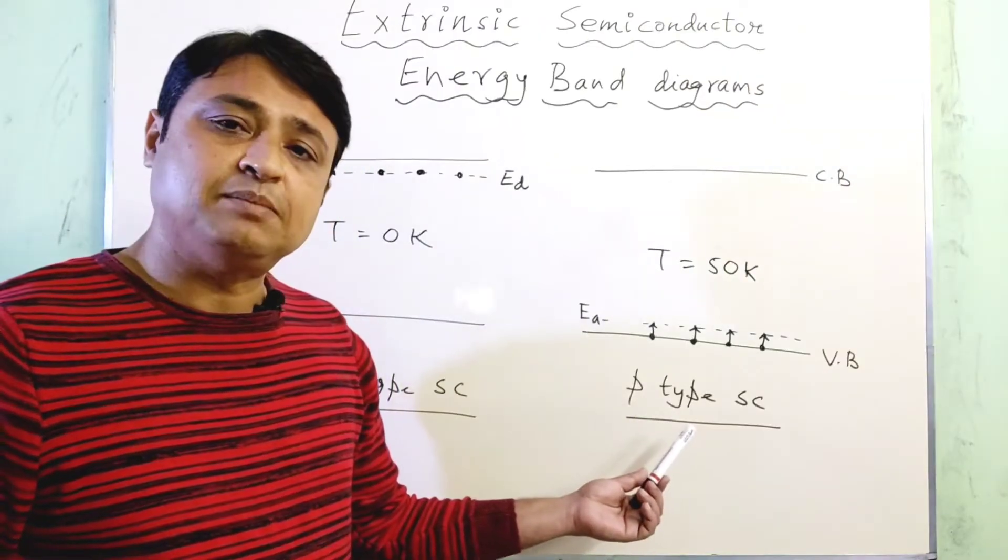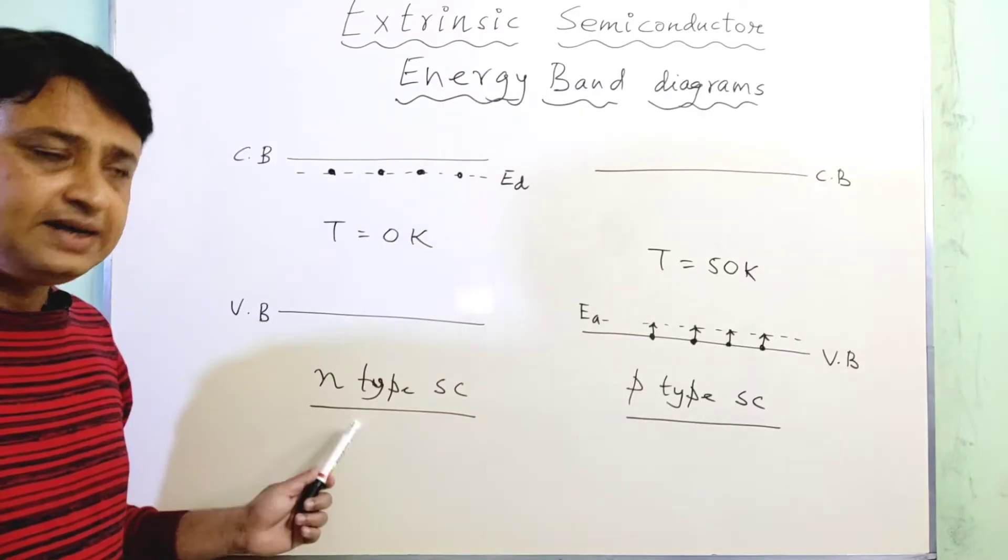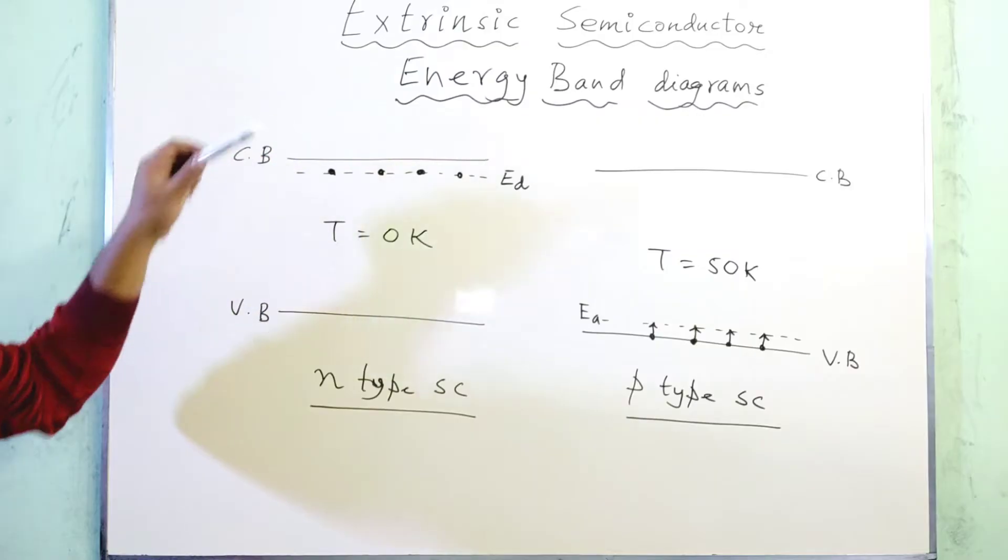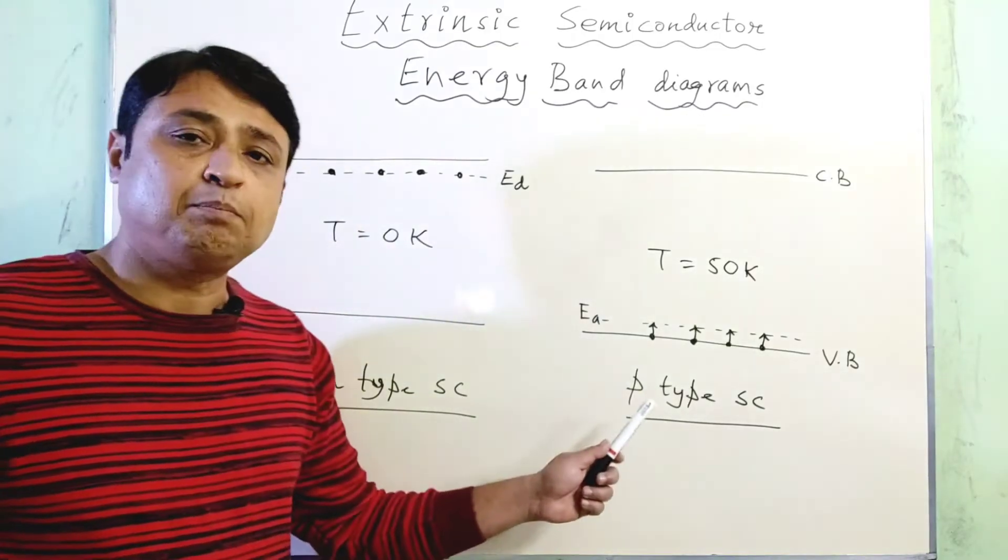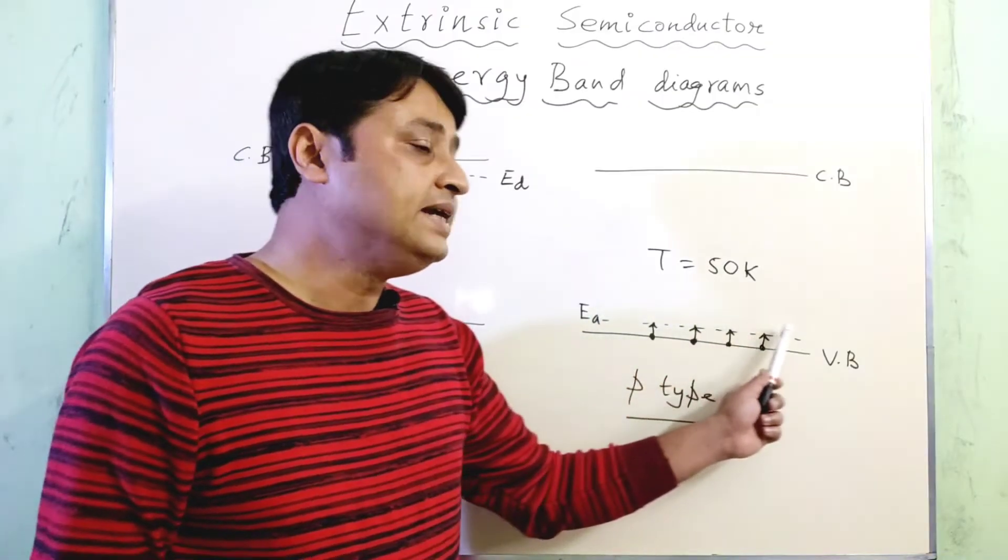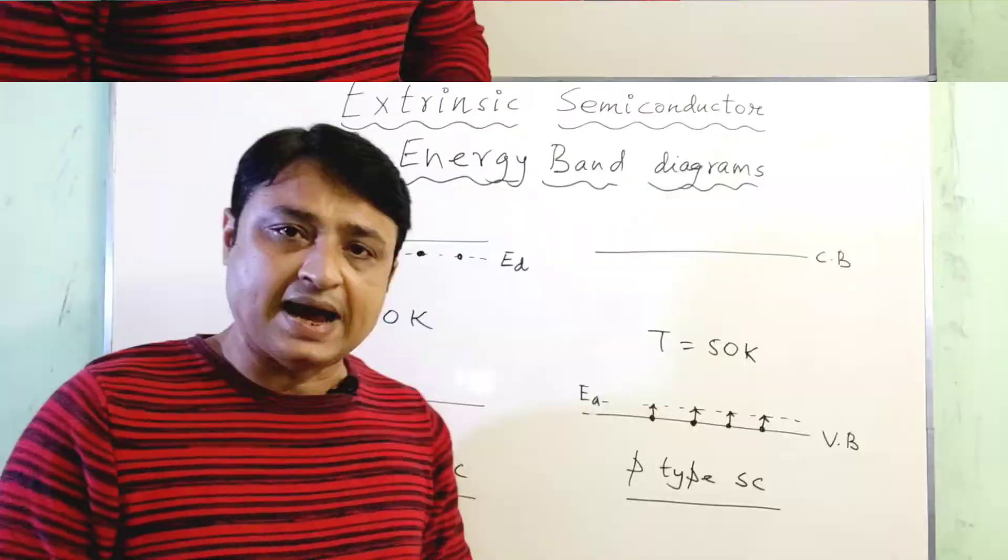So this is a p-type semiconductor, this is an n-type semiconductor. For an n-type semiconductor, the donor level lies adjacent to the conduction band, and for a p-type semiconductor, the acceptor level lies near to the valence band inside the energy band gap.